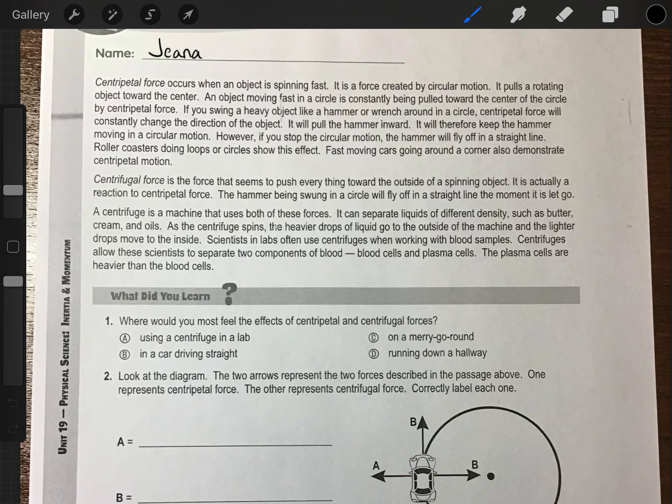Centripetal force occurs when an object is spinning fast. It is a force created by circular motion. It pulls a rotating object toward the center. An object moving fast in a circle is constantly being pulled towards the center of the circle by centripetal force. If you swing a heavy object like a hammer or a wrench around in a circle, centripetal force will constantly change the direction of the object. It will pull the hammer inward. It will therefore keep the hammer moving in a circular motion. However, if you stop the circular motion, the hammer will fly off in a straight line. Roller coasters doing loops or circles show this effect. Fast cars going around a corner also demonstrate centripetal motion.